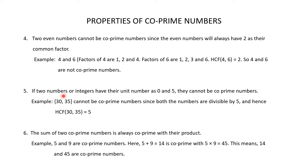If two numbers have their unit digit as 0 or 5, they cannot be co-prime numbers. For example, 30 and 35 cannot be co-prime numbers because both are divisible by 5, so their HCF will always be 5. Since the HCF of 30 and 35 is 5 and not 1, these two numbers can never be co-prime numbers.